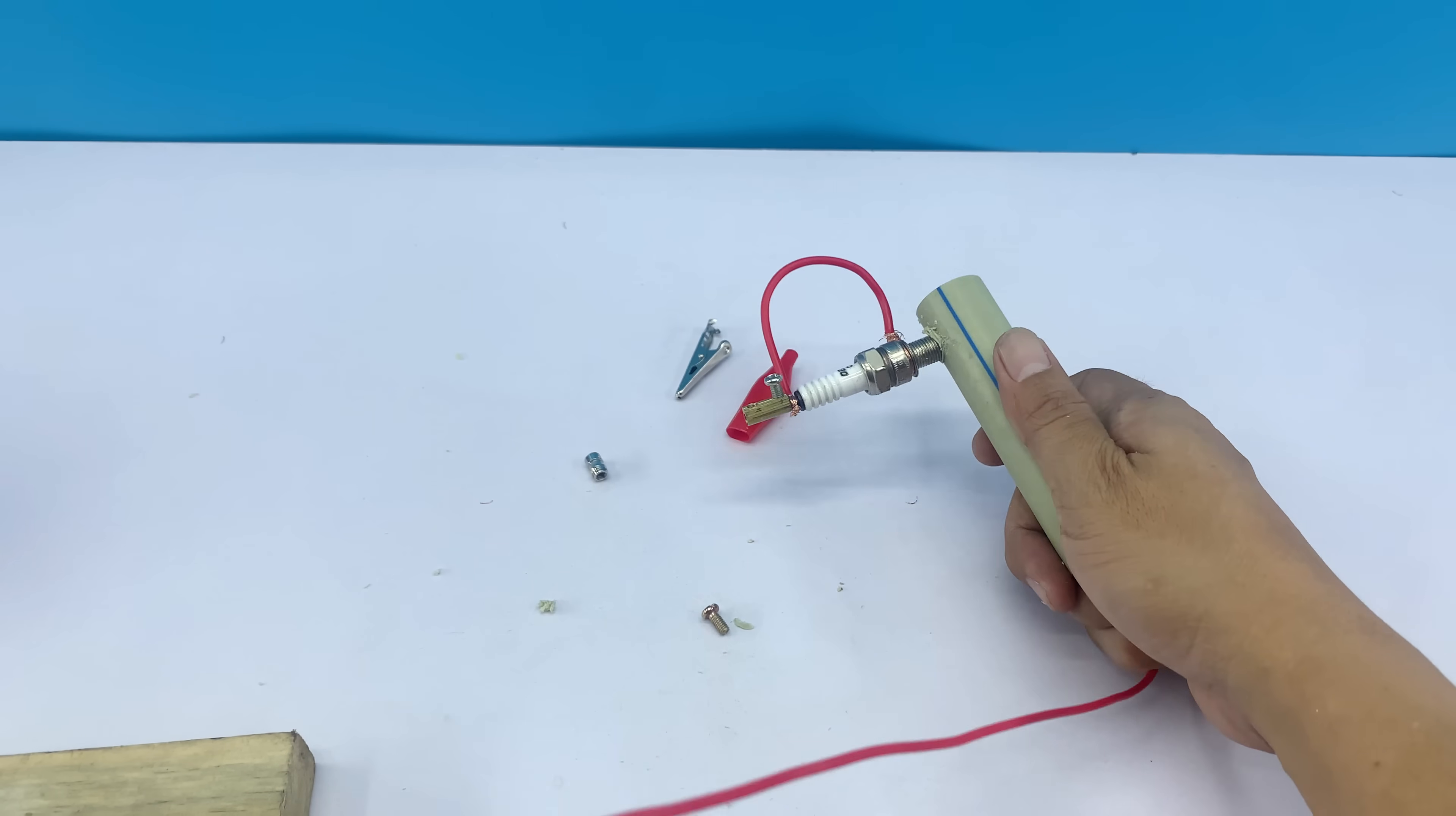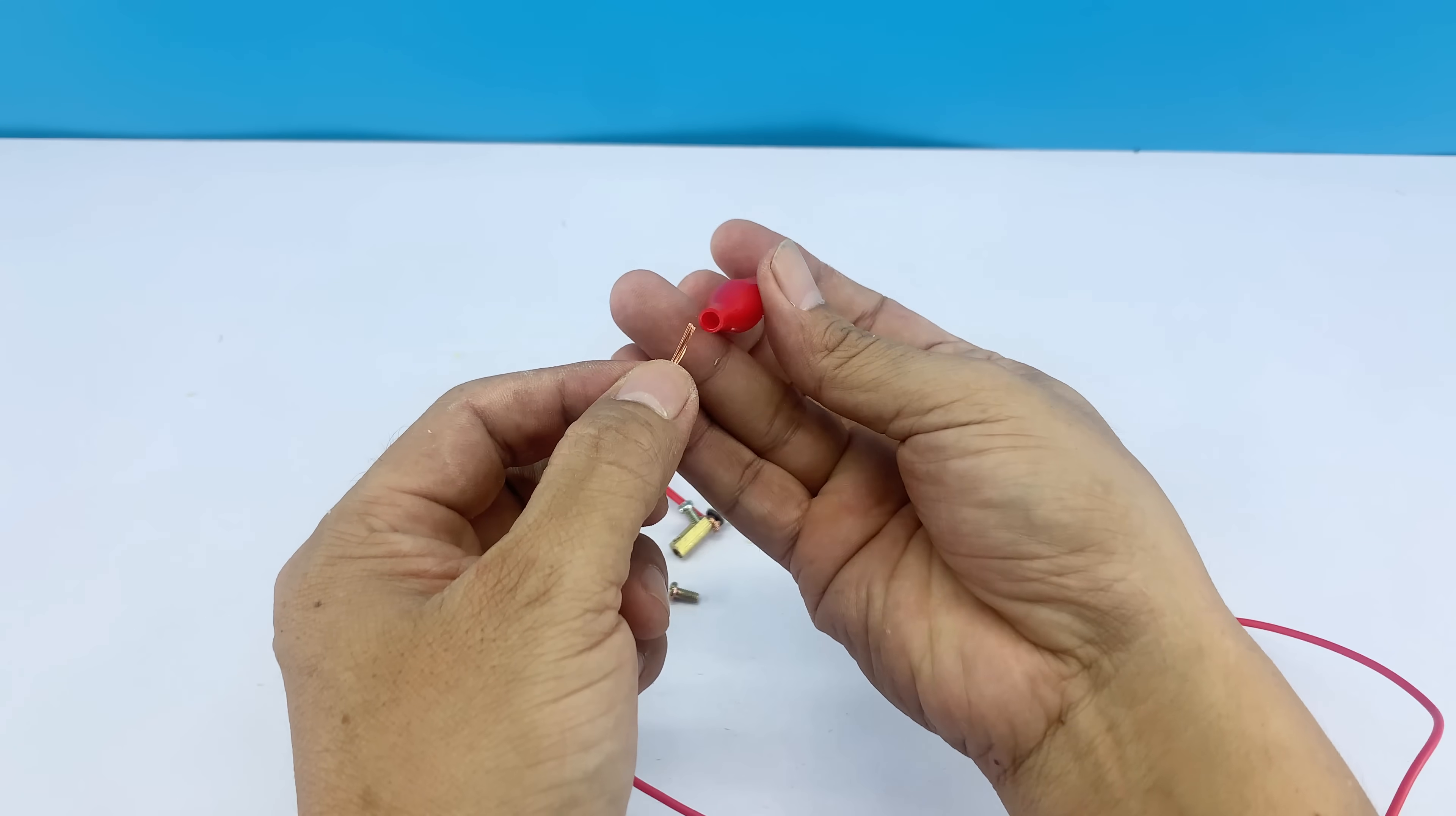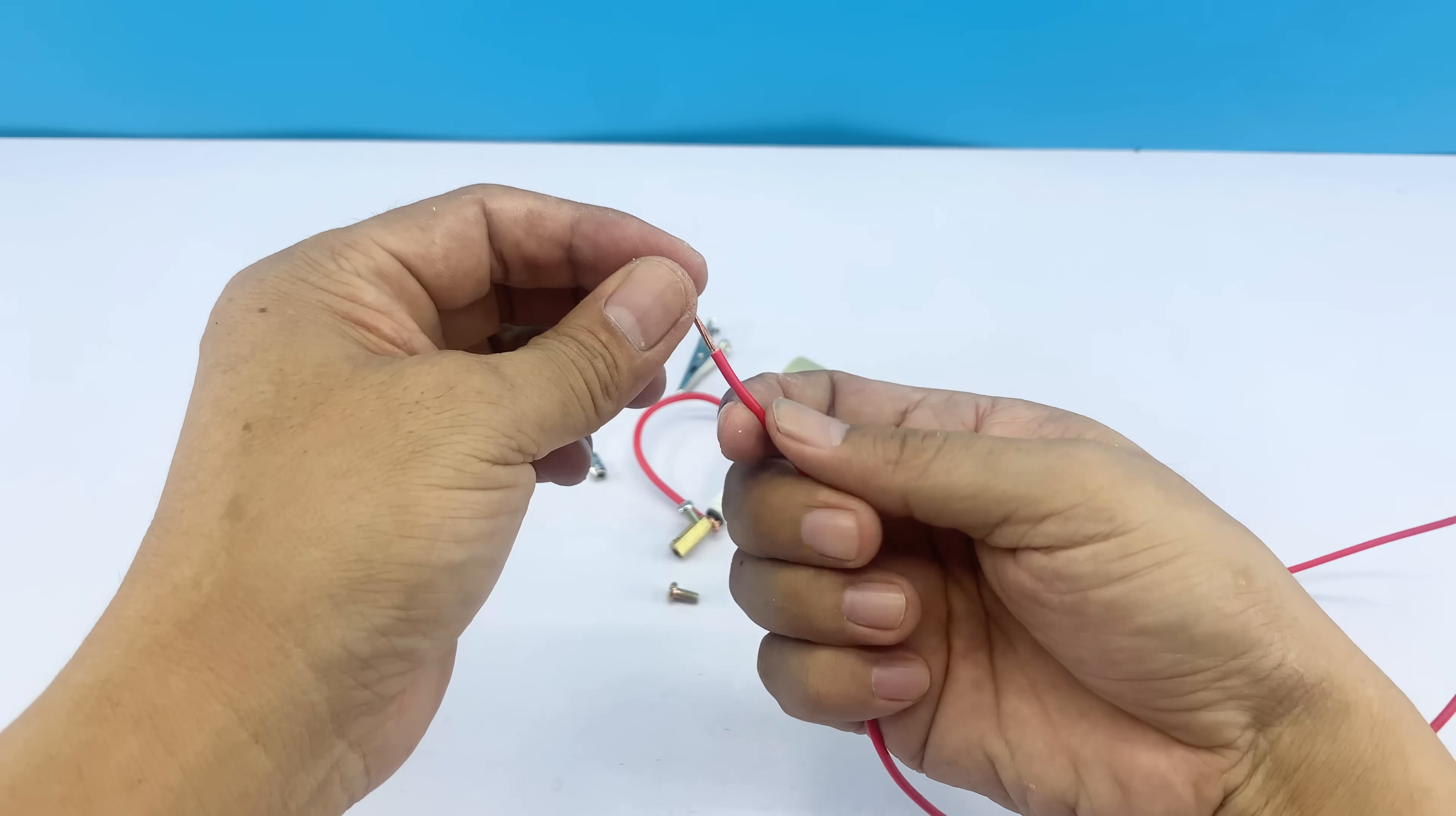After securing the spark plug assembly in the wire, I then connect the remaining end of the wire to the crocodile clip. Doing it in this order keeps things neater and prevents any obstruction.